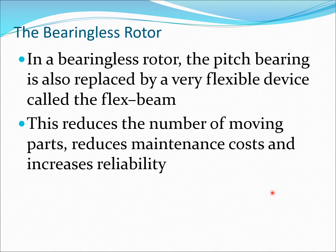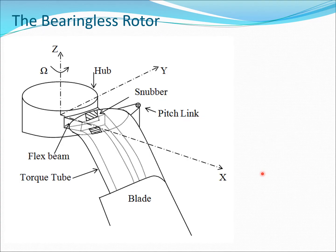A further simplification is the bearingless rotor, which replaces the pitch bearing with a very flexible device known as the flex beam, reducing the number of moving parts further even from a hingeless rotor, thereby reducing maintenance cost and increasing reliability. The flex beam is a very thin beam made of advanced composite materials that lets the blade flex. A torque tube transfers torque to the blade. Most tail rotors now use bearingless concepts.